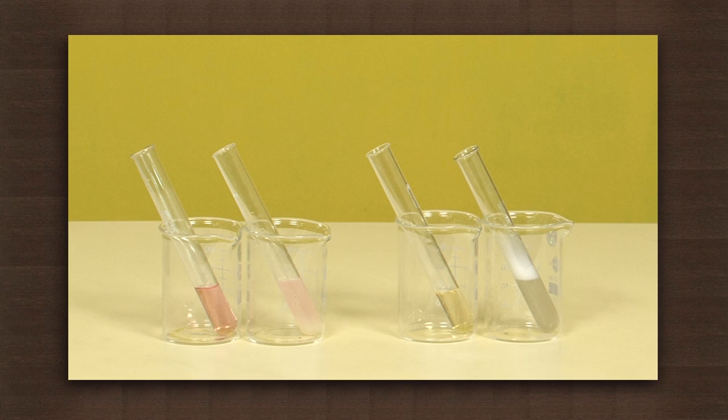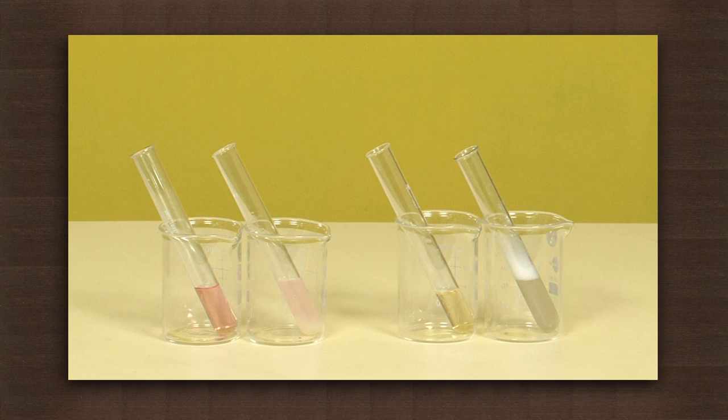You will see that china rose indicator turns acidic solutions into magenta red and reddish, and basic solutions into yellow and greenish yellow.